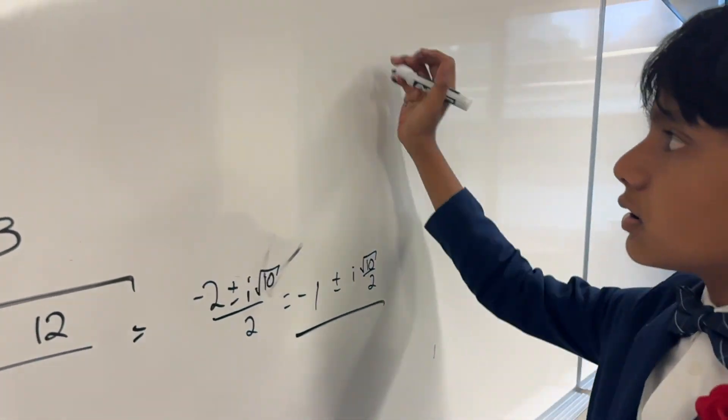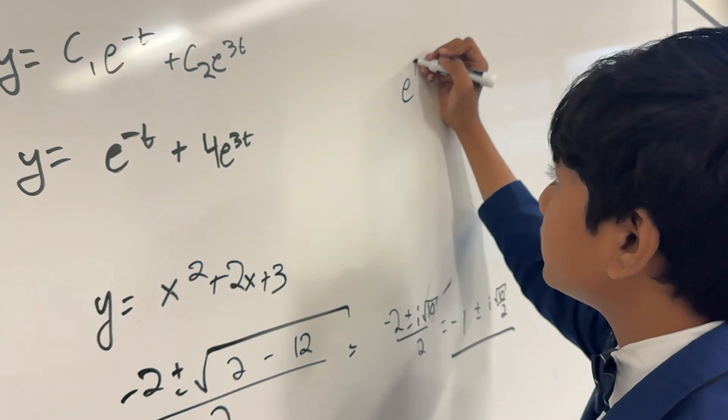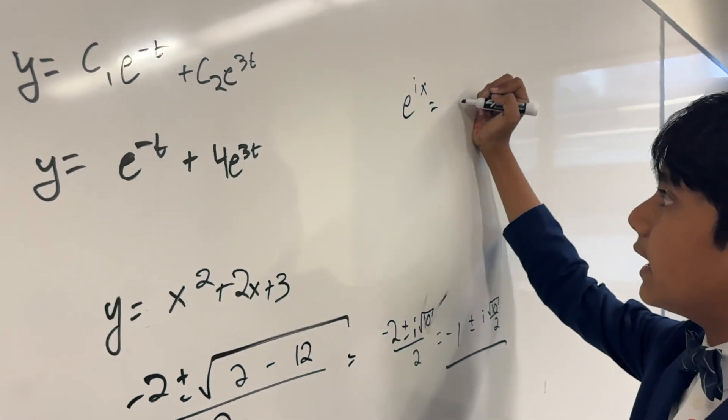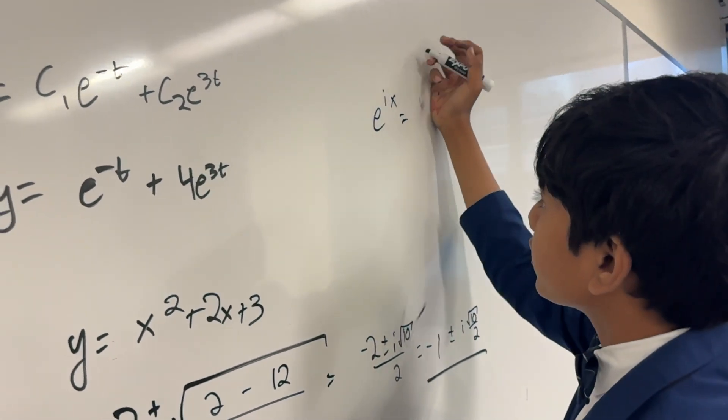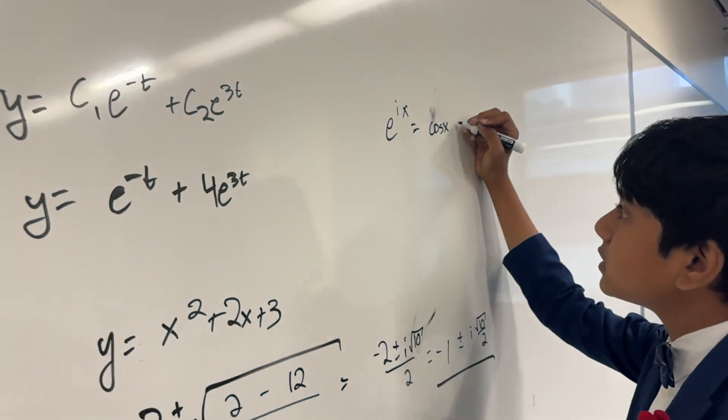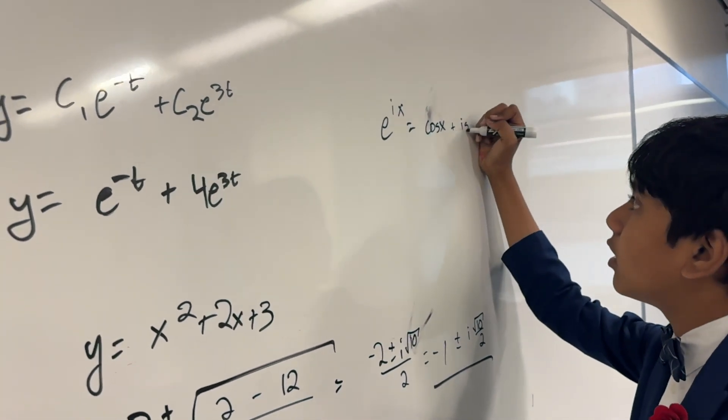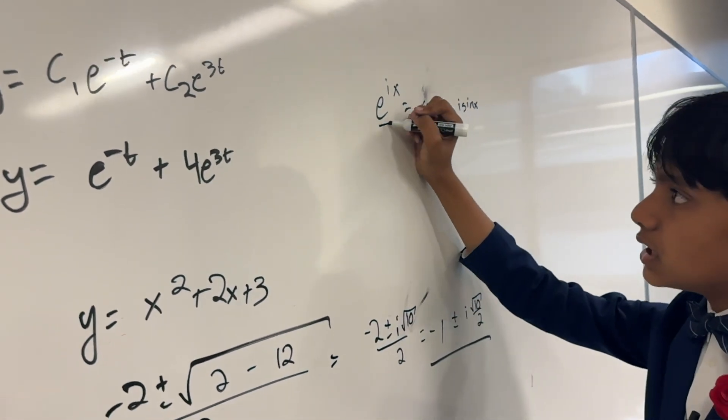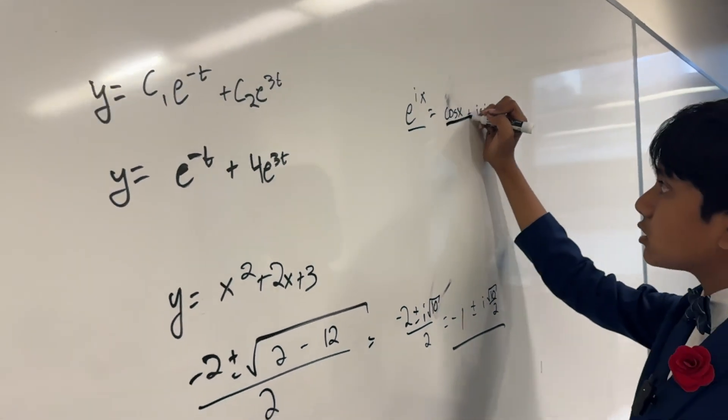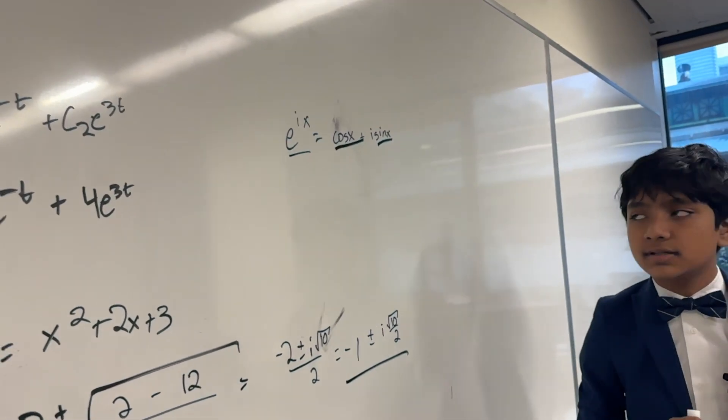So we get minus 2 plus or minus i square root 10 over 2 equals minus 1 plus i times square root 10 over 2. So now, what the heck do we do with this? Well, here's the kicker. We can actually use Euler's formula. And if you want to understand where this comes from, all you need to know is Taylor series of these specific functions. So e to the x is Taylor series, cosine x is Taylor series, sine x is Taylor series.